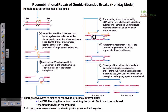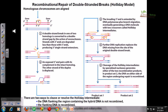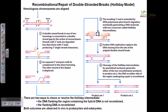This leads to the formation of a Holliday intermediate. This is one Holliday junction, and this is another Holliday junction here. Further DNA replication replaces the DNA missing from the site of the original double-stranded break. These regions are filled with newly synthesized DNA strands with the help of polymerase — these two regions are newly synthesized.